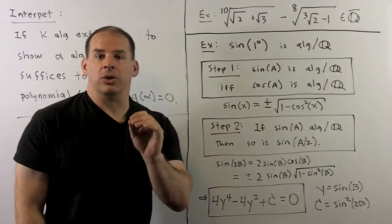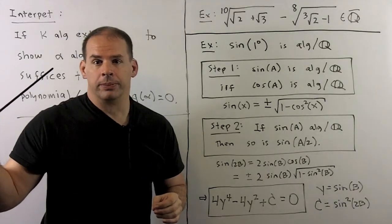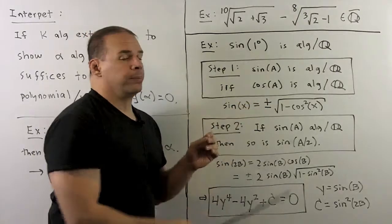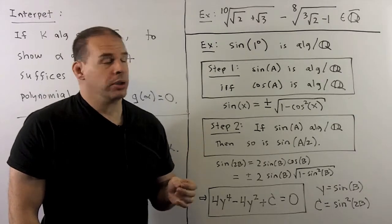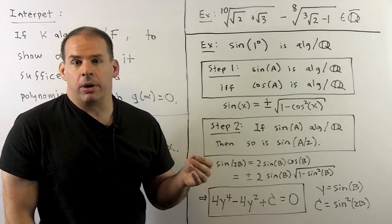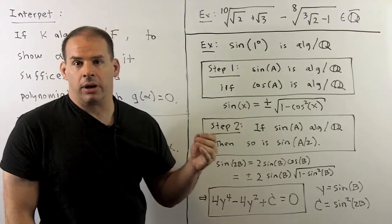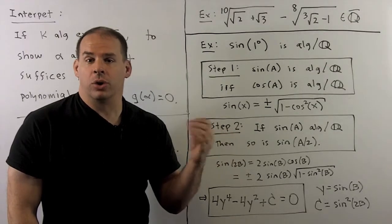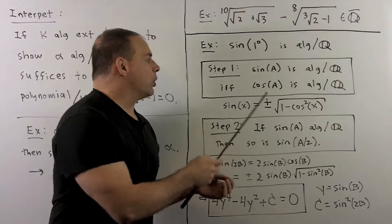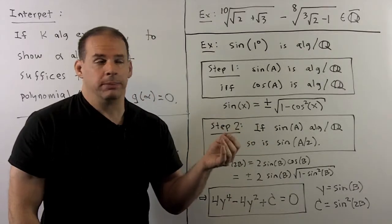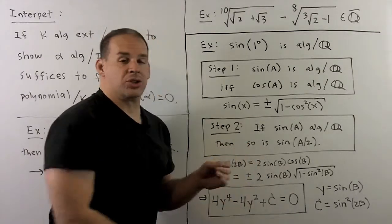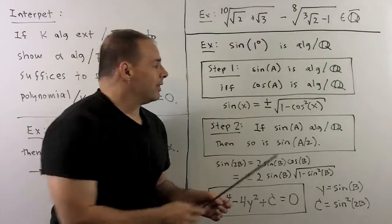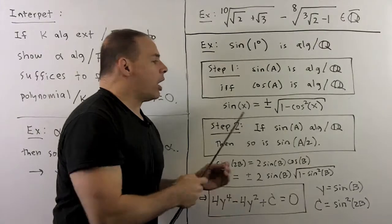If we insist on only using real numbers, we can appeal to the methods of our theorem. For instance, let's show that sine of one degree is an algebraic number. We proceed in several steps. First step: sine of a is an algebraic number if and only if cosine of a is an algebraic number. To see this, take cosine squared plus sine squared equal to one and isolate one of them. If I assume cosine of a is algebraic, since the algebraic numbers are a field, one minus cosine squared of a is also algebraic. Taking the square root — by our result just shown — that's also algebraic. So sine of a will also be algebraic, and it works in the other direction too.